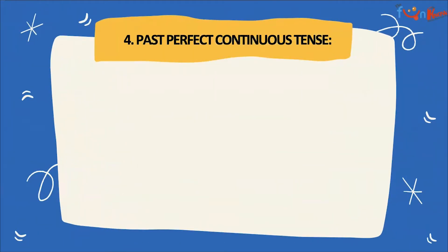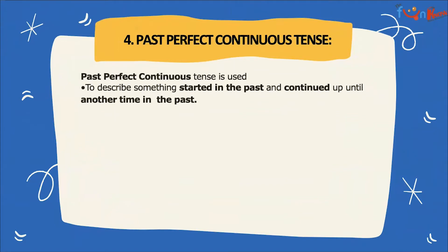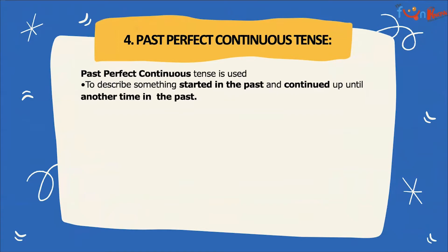Now, the last and fourth type of past tense is past perfect continuous tense. It is used to describe something that started in the past and continued up until another time in the past.